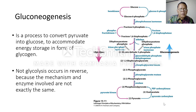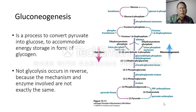Gluconeogenesis is a process to convert pyruvate into glucose to store energy in the form of glycogen. Gluconeogenesis is not simply glycolysis occurring in reverse, because the mechanisms and enzymes involved are not exactly the same.